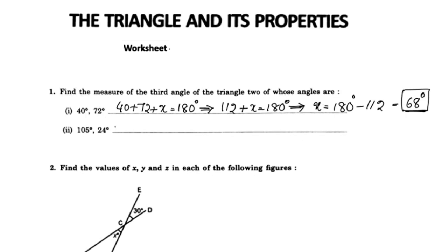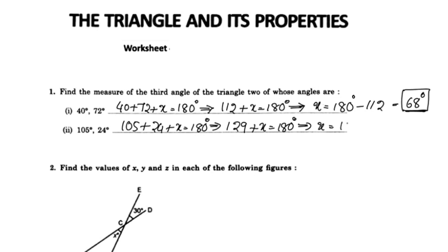Next: 105 plus 24 plus x is equal to 180 degrees. 129 plus x equals 180 degrees, so x equals 180 minus 129, which is 51 degrees.